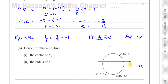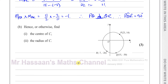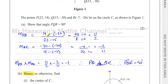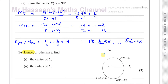Now for part B, it says 'hence or otherwise, find the center of C.' Whenever you see the word 'hence,' it means something from the previous part of the question is going to help us. The 'hence' method is normally much easier than the 'otherwise' method, so when you see 'hence,' stop and think about what it is from this question that's going to help you find the center of the circle.